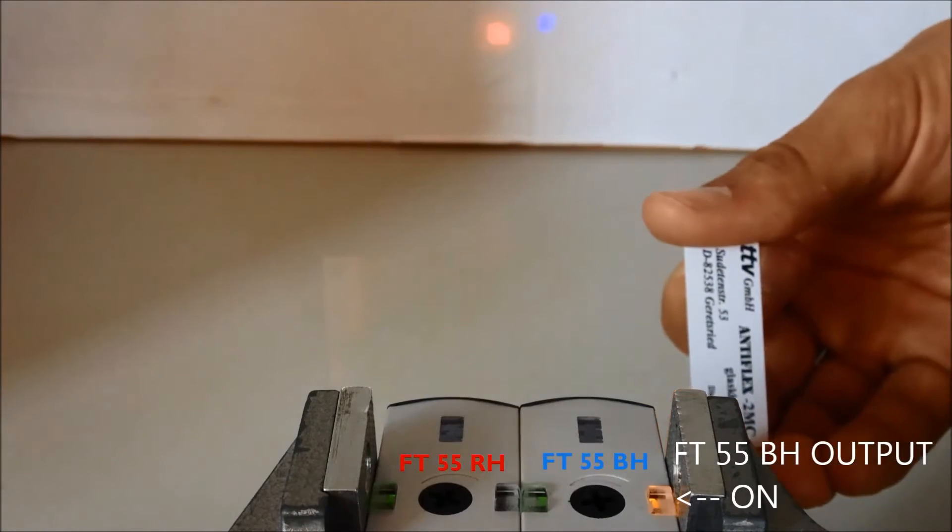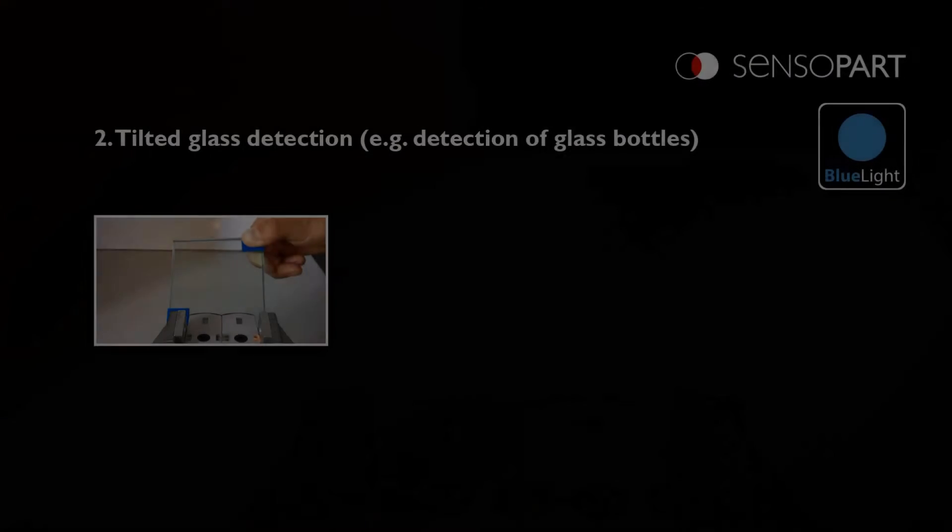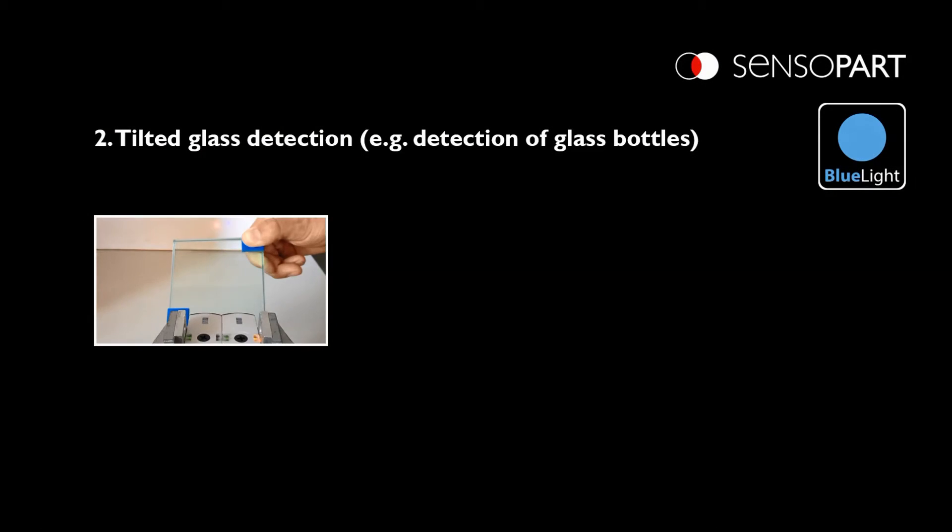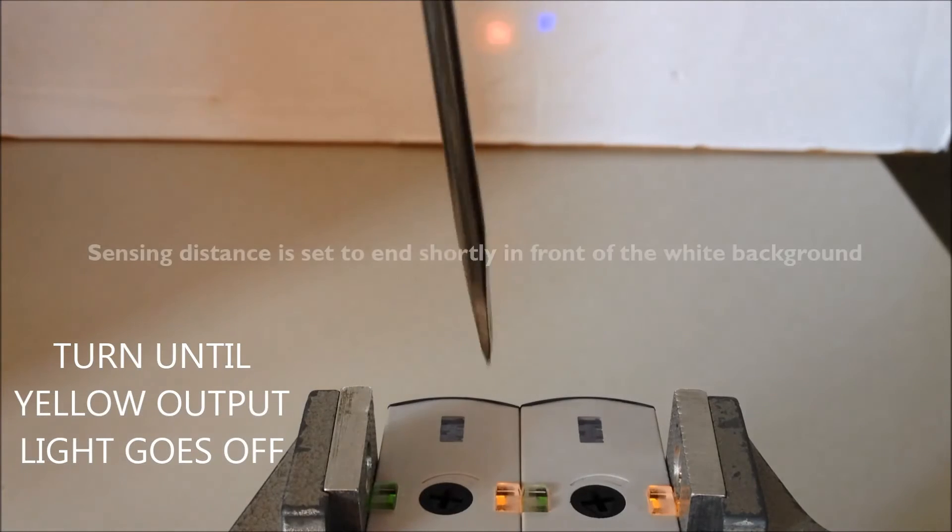Close or far away. Next we'll show even if the glass target is tilted at a 45 degree angle to the beam, the blue light still works.